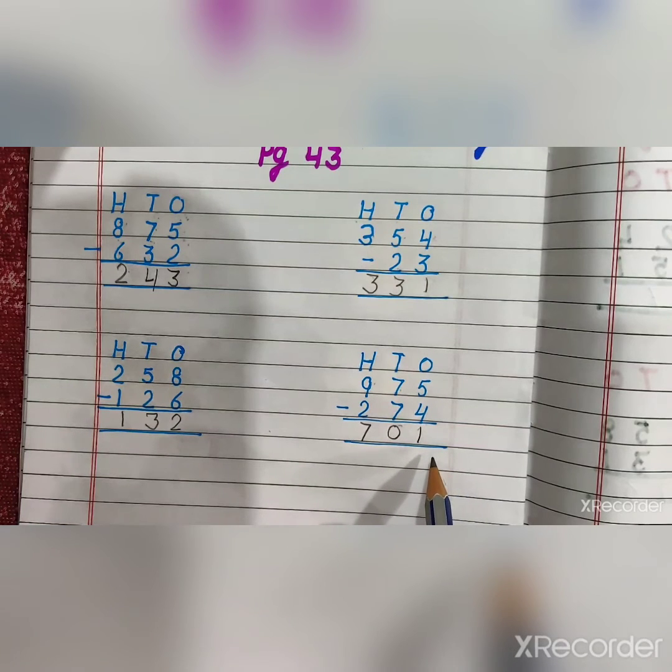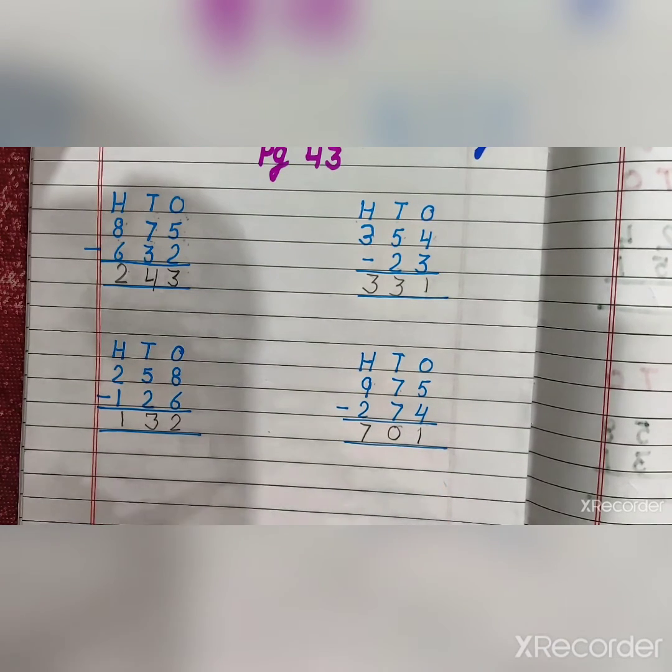975 minus 274 is equal to 701. Students, do page number 43 in your math book. Thank you.